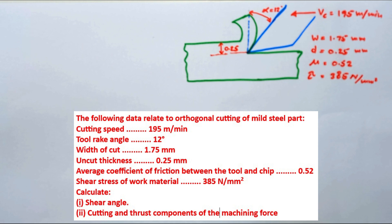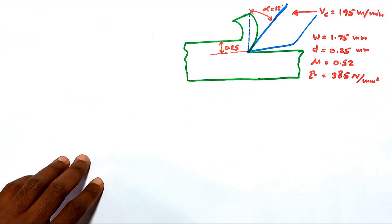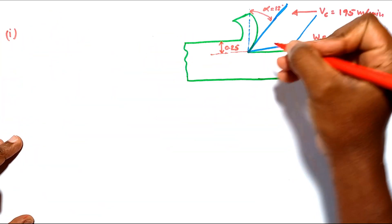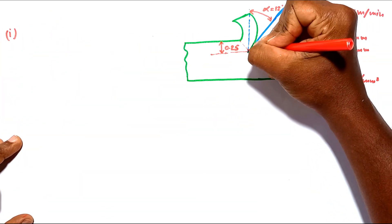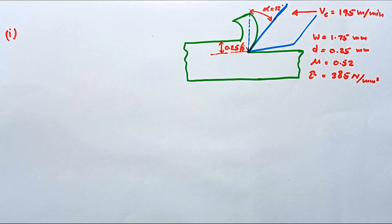The shear stress of work material is 385 N per square millimeter. We need to calculate the shear angle and the cutting and thrust components of the machining force. We are going to determine the shear plane angle using the Ernest-Merchant theory.